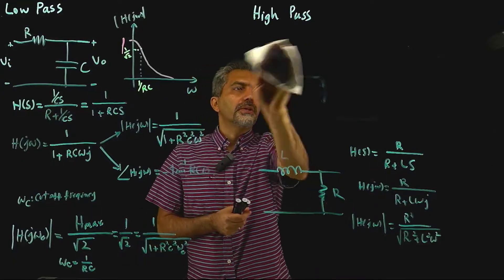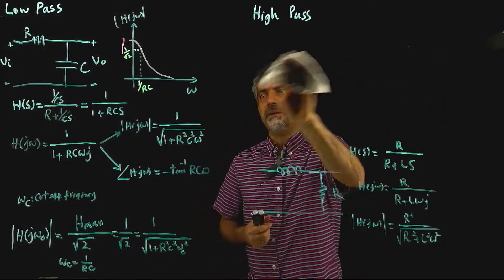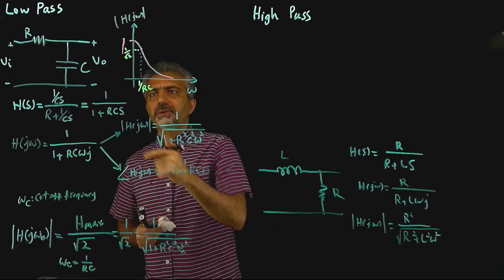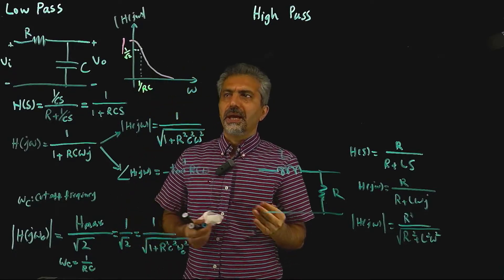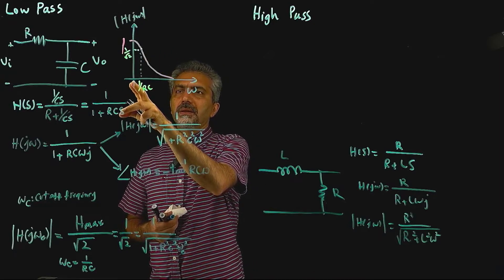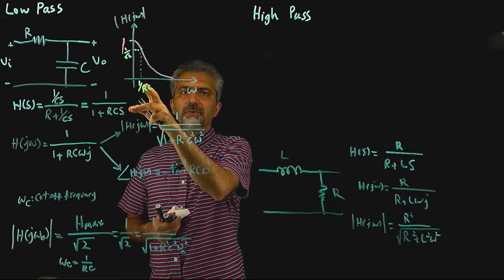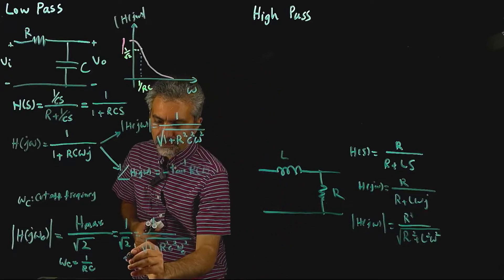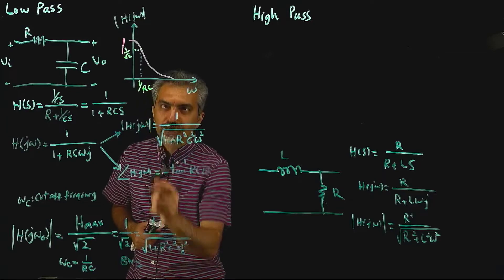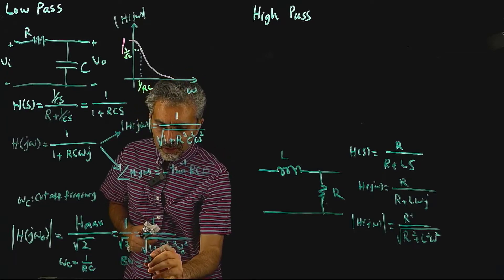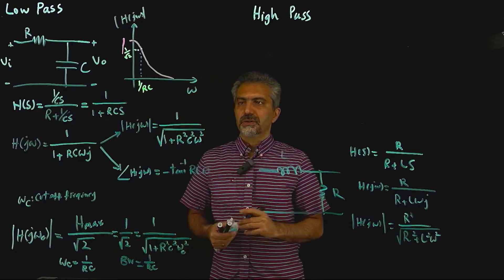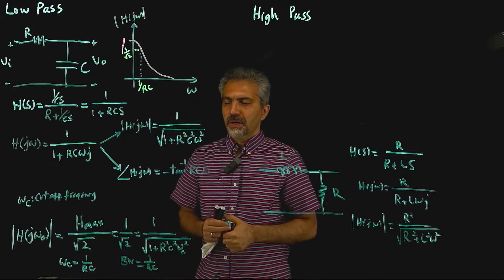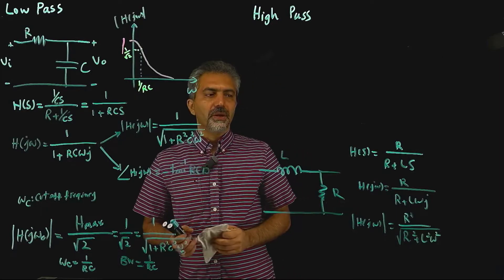The bandwidth of this filter is basically the frequencies that pass through. If you approximate, frequencies from zero to the cutoff frequency are the ones passing through. Therefore the bandwidth (sometimes shown as BW) is equal to 0 to 1/(RC), which is the same as 1/(RC). So zero to the cutoff frequency are the frequencies passing through the circuit, and that's the bandwidth of your filter.